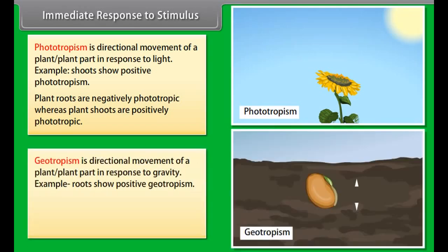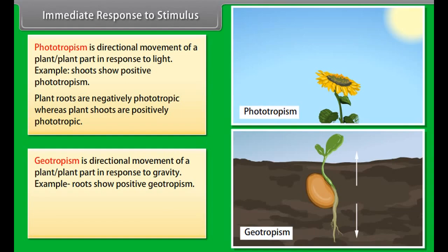Geotropism is directional movement of a plant or plant part in response to gravity. Example: roots show positive geotropism. Plant roots are positively geotropic whereas plant shoots are usually negatively geotropic.